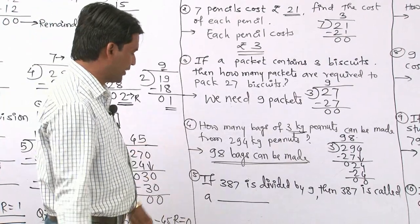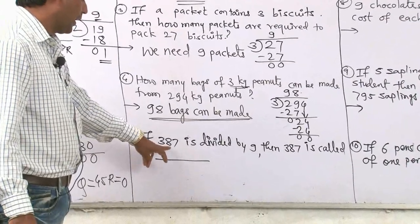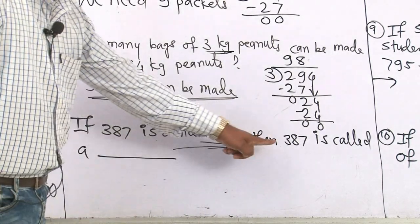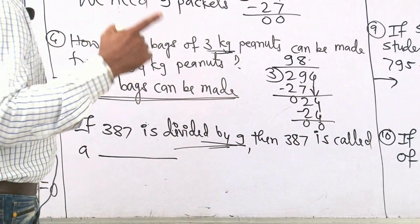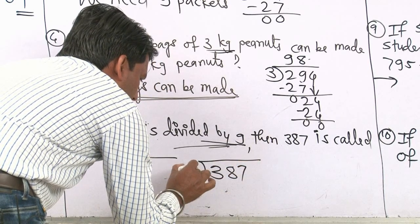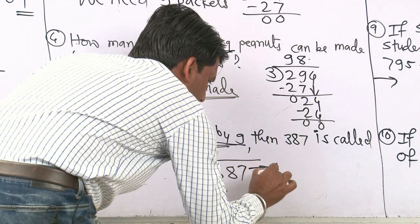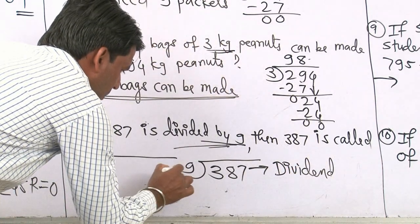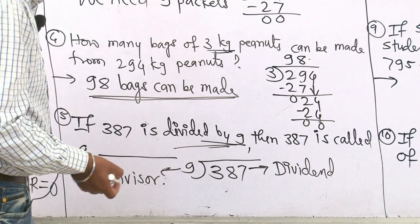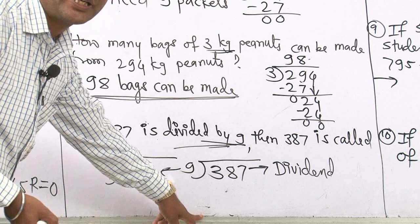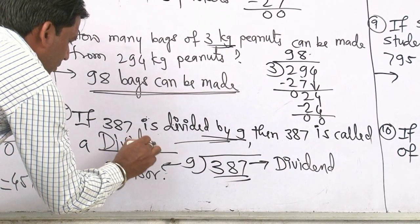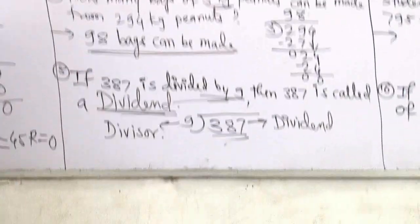Next, fifth one: if 387 is divided by 9, then 387 is called what? Let us see — 387 divided by 9. This number 387 is the dividend. The number 9 is the divisor. After dividing them, the answer we get is called the quotient. And what remains at the bottom is the remainder. So 387 is called the dividend.